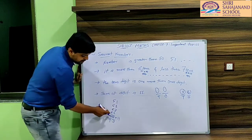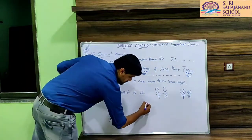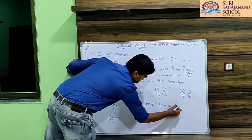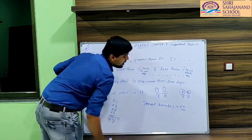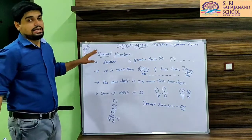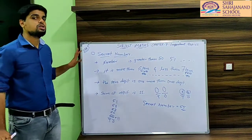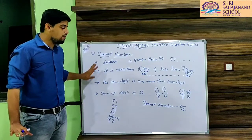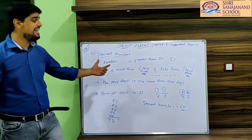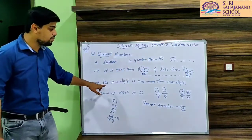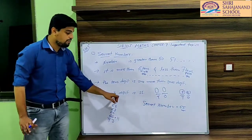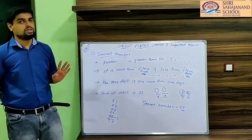The sum of these 2 digits is 11, so our secret number is 65. In this manner, simply by reading the instructions, you can find any secret number. Practice such types of questions, as they may be asked in your coming exams. Just read the instructions carefully, find the range, determine the digits at the 1's and 10's place, and finally verify by adding or subtracting those 2 digits.